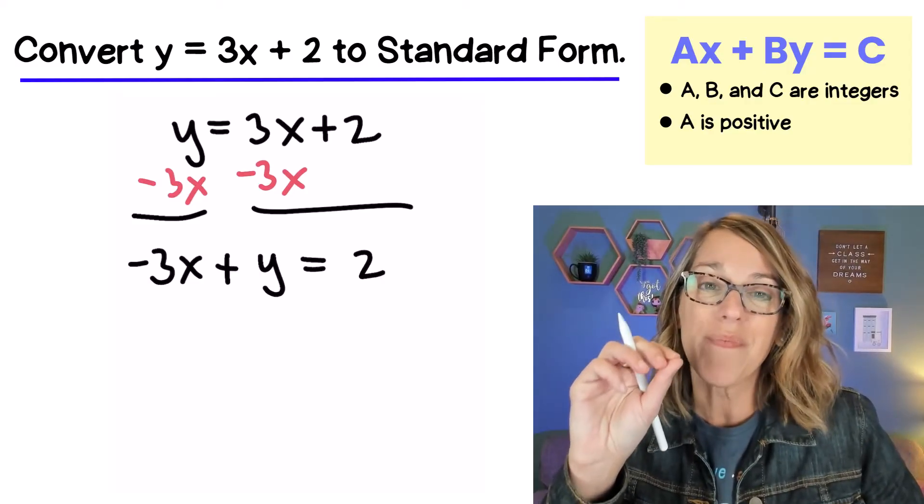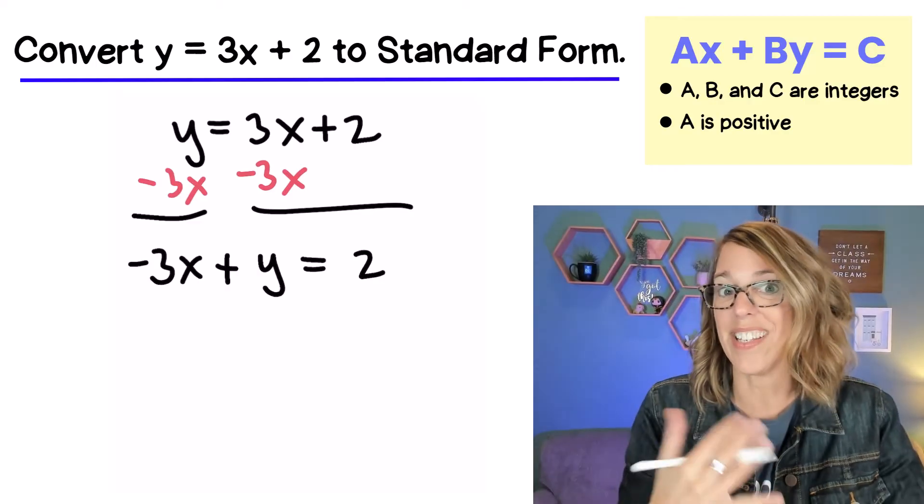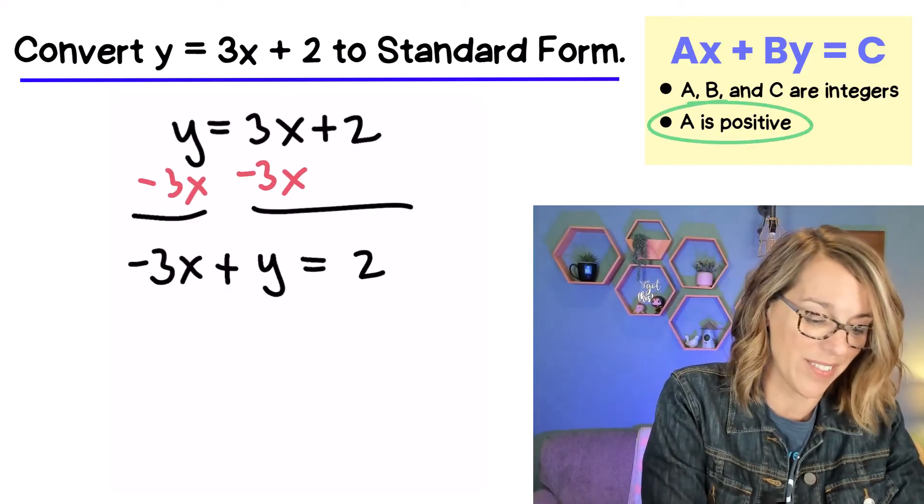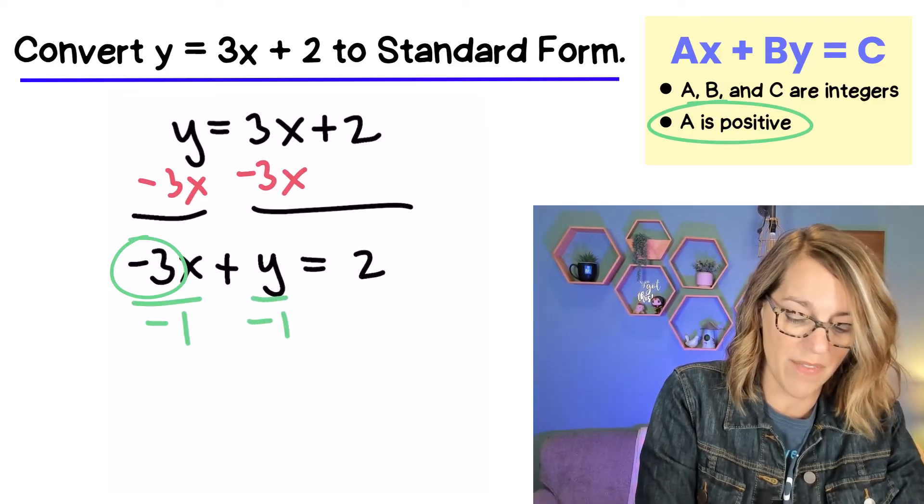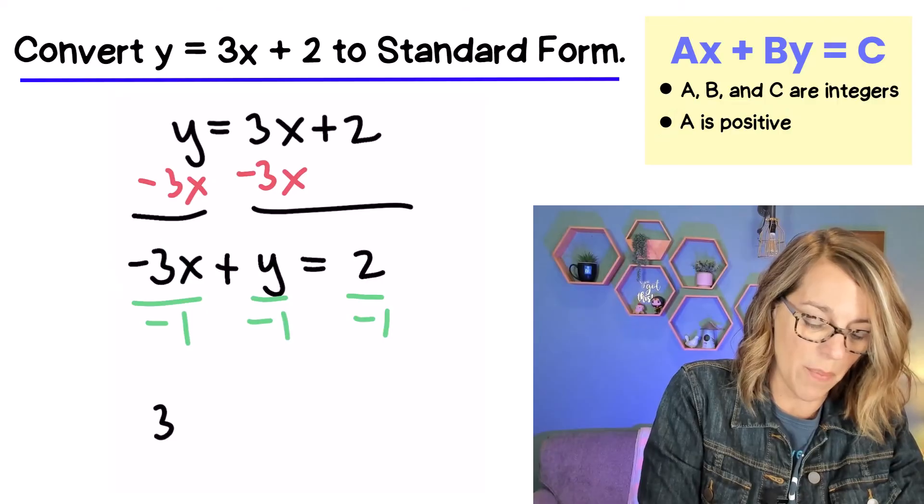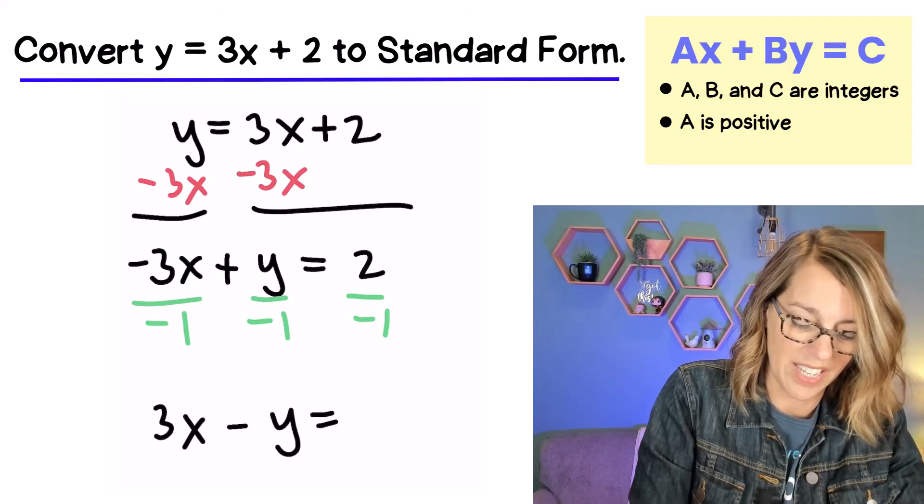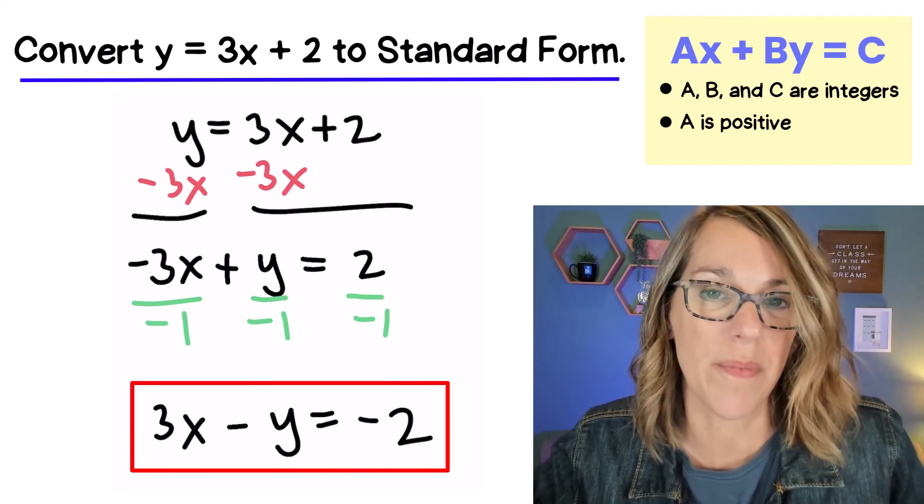Now we are almost there. The only criteria that we haven't satisfied is to make sure that a is positive. Right now a is negative 3, so I'm going to divide every one of these terms by negative 1. We end up with positive 3x minus y is equal to negative 2, and there's our standard form.